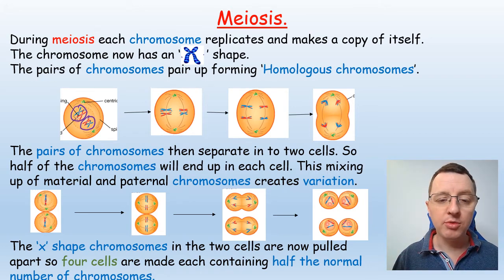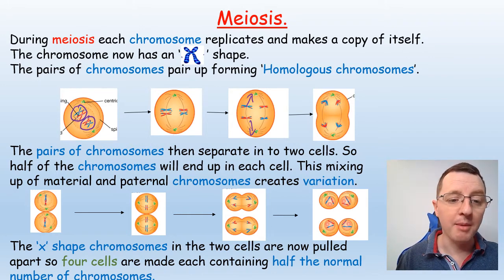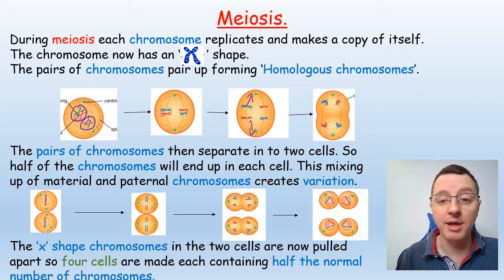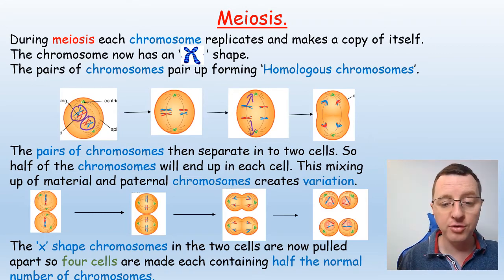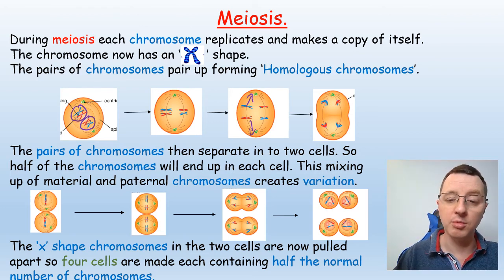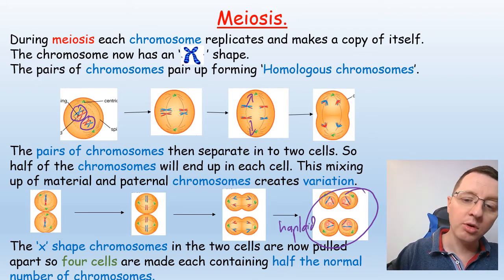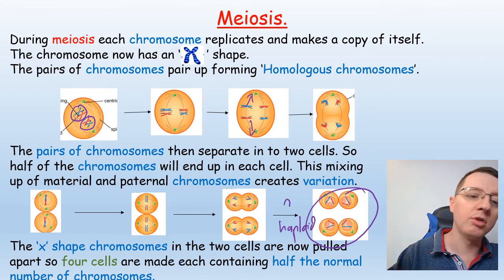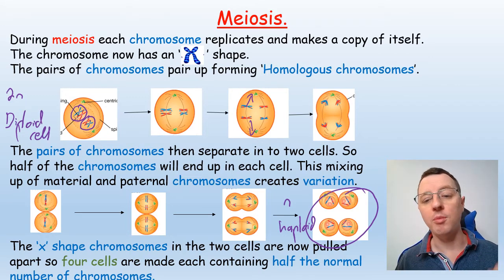Once we have these homologous chromosomes they begin to be separated to opposite sides of the cell, so we end up with two cells each with half the number of chromosomes — possibly a mix of maternal and paternal chromosomes, creating more variation. The X-shaped chromosomes then need to be separated and pulled apart, so four cells are made each containing half the normal number of chromosomes — haploid cells. We've begun with a diploid (2n) cell and through two separations formed four haploid cells.